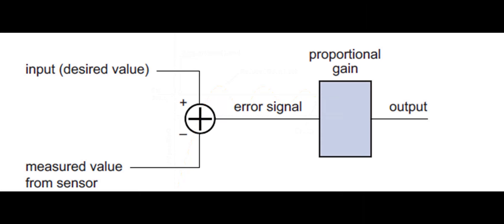This diagram is of a proportional controller. The circular symbol with the plus sign is an adder. It adds the two input signals, however the input with a minus sign beside it inverts the signal so that the error signal at the output of the adder is the difference rather than the sum of the inputs.